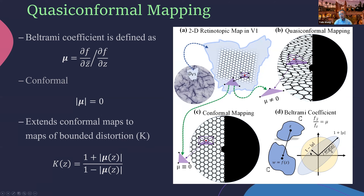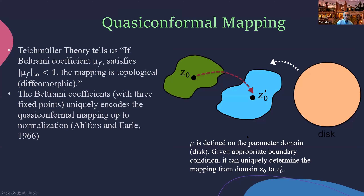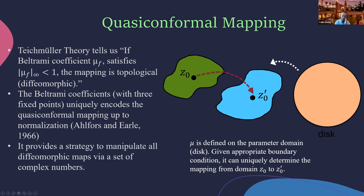With mu we can define k, which measures the distortion direction. This turns out to be extremely powerful for analyzing the retinotopic map. We borrow the Teichmüller theorem, which states: if the Beltrami coefficient mu_f satisfies the infinity norm less than one, the matching is diffeomorphic. The best part is that with three fixed points, the Beltrami coefficient map uniquely determines a diffeomorphic map. Given two disks and a disk of Beltrami coefficients, we can uniquely reconstruct the matching from the visual field to the parameter space.